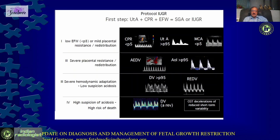In stage-based management, Gratacos divides cases into four stages. Stage 1: mild placental resistance reflected as altered uterine artery PI, MCAPI, or CPR. Stage 2: severe placental resistance, typically absent diastolic flow in the umbilical artery or reversal of flow in the aortic isthmus. Stage 3: severe hemodynamic adaptation — reversal of flow in the umbilical artery during diastole, or the A-wave in the ductus venosus reaching the baseline but not going beyond. Stage 4: high suspicion of acidosis — the ductus venosus shows A-wave reversal.